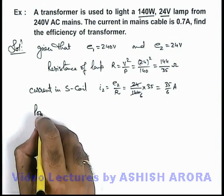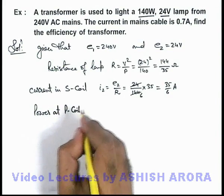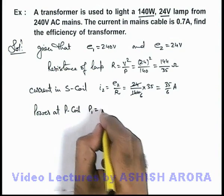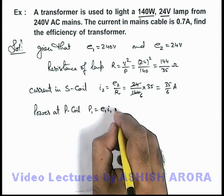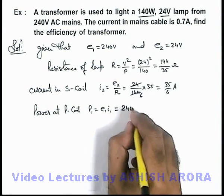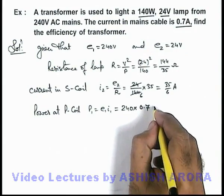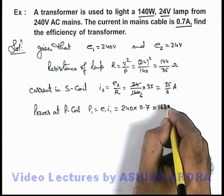Now if we calculate the power at primary coil, the power at primary coil which is being supplied to the transformer P1, it is E1 I1. That can be written as 240 multiplied by current in the mains cable is given as 0.7 ampere, this is 168 watt.